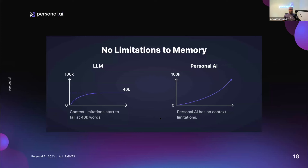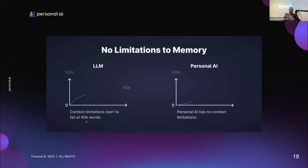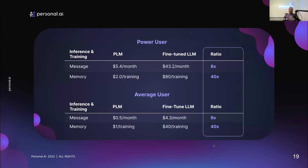From an ownership standpoint, large language models are generally owned by big tech or specific companies. In the case of PLMs, every individual model is unique, and the user gets to own and train the data. Personal AI as a company is not ingesting any data whatsoever into any model to influence it — contrary to majority of companies you'll see. PLMs also have no limitations on memory; it's fundamentally based on the memory system. In contrast to fine-tuned LLM techniques, our benchmarks show 40x cost-effectiveness in memory usage and almost 10x more cost-effective for inference.